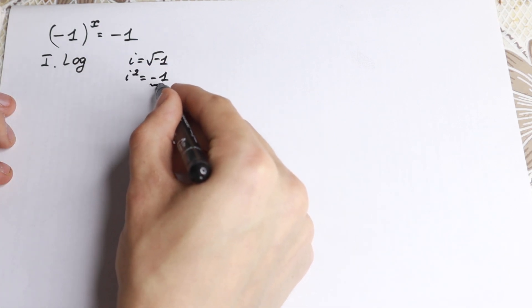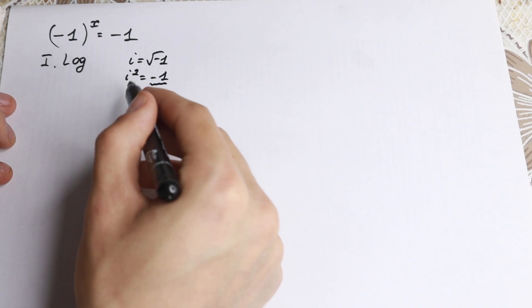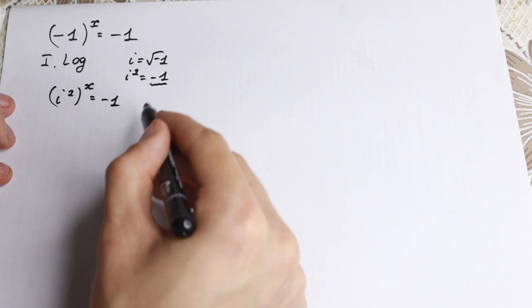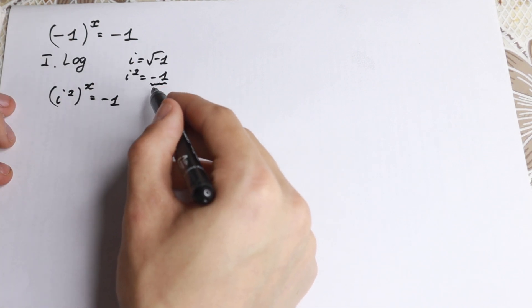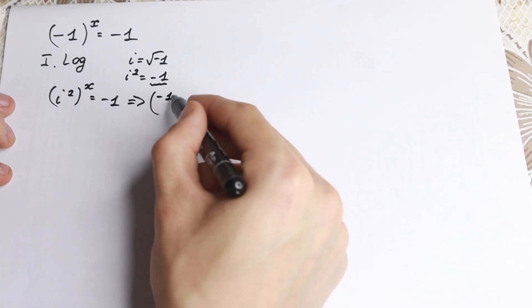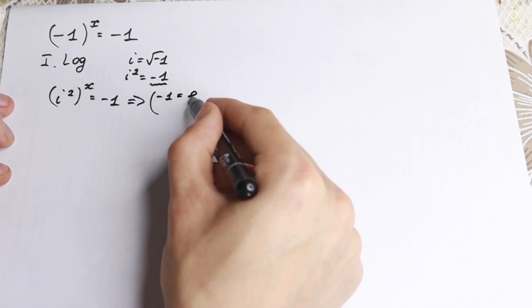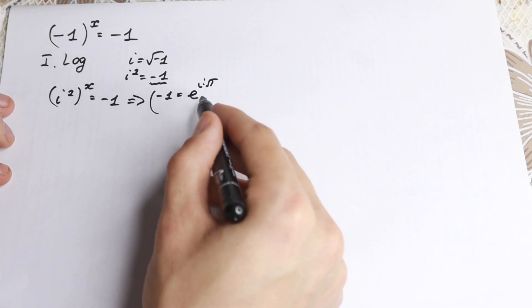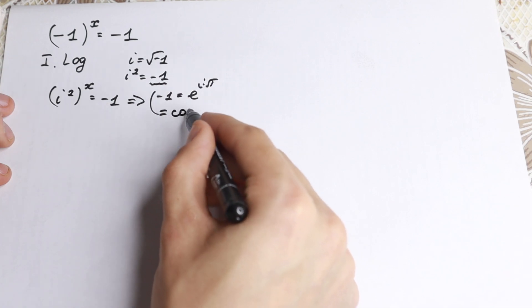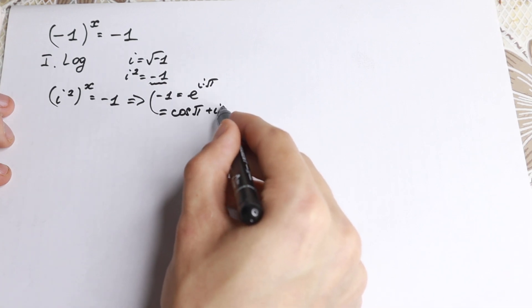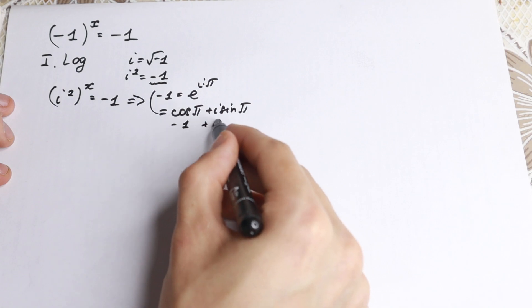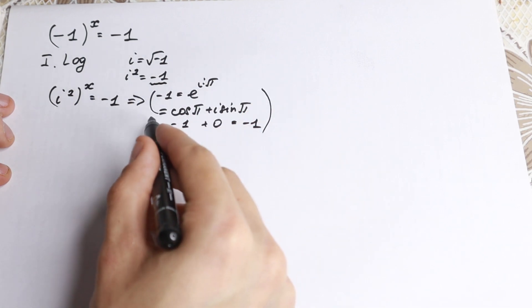We have minus one on the left and minus one on the right. We can substitute minus one with i squared. So we get i squared to the power x equal to minus one. Now, a really important rule: in complex numbers, minus one equals e to the power i times pi. This is the trigonometric form of a complex number: e^(iπ) equals cosine π plus i times sine π, which gives us zero plus zero, equal to minus one.